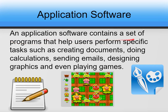Application software are basically those softwares which we interact with directly — we directly use these softwares on our computer system. The definition says an application software contains a set of programs that help users perform specific tasks. A specific task means performing a particular type of task, like if you want to draw on a computer you will use a paint program.